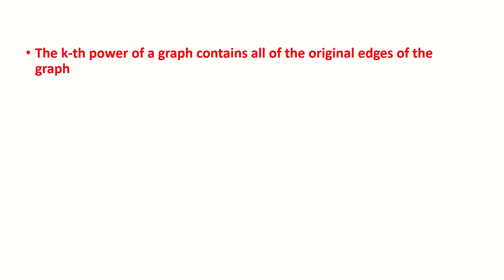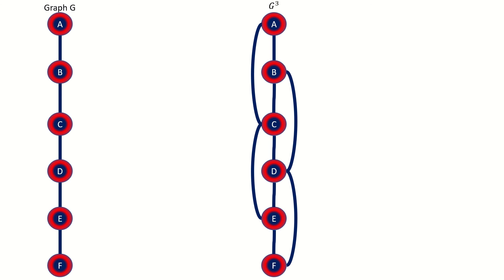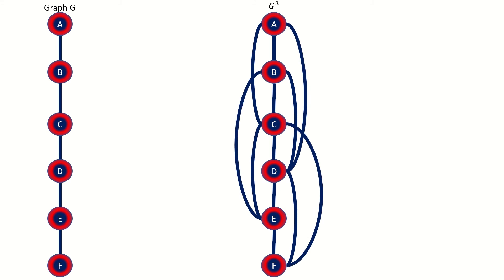Notice that by definition, the kth power of a graph G, where k is greater than or equal to 1, will contain all of the connections in G as well, as our adjacency rule says to connect vertices in the kth power if their distance is at most k in the original graph. What this means is that if you want to find the power of a graph, you don't have to start entirely from scratch. In our example, we could have copied the original graph over, looked for vertices that are 2 apart, connected them, then looked for vertices that are 3 apart and connected them in the third power graph. This is the quicker way of finding powers of graphs.